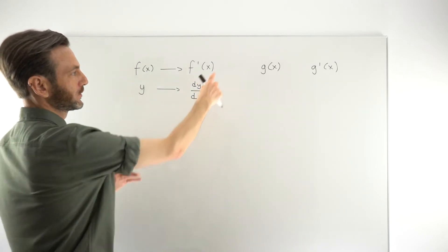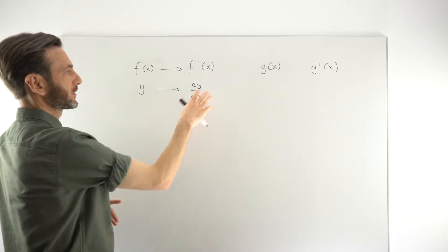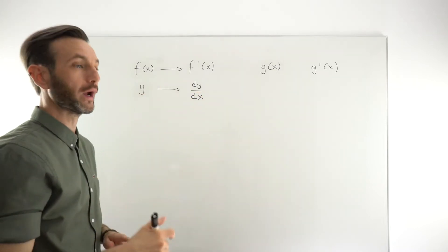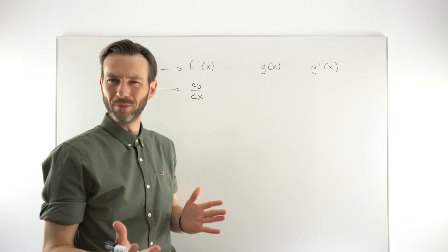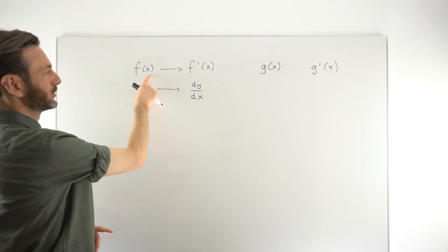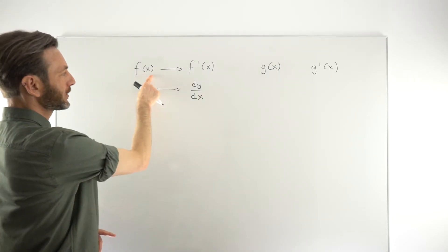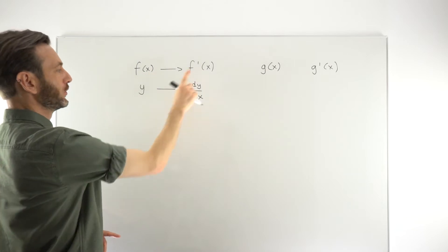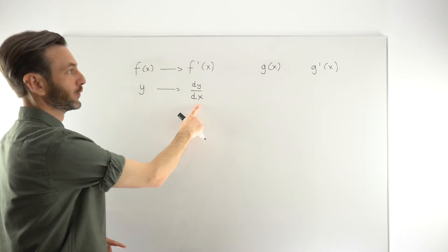The way that we arrive at these two notations thinks about differentiation in a slightly different way, but you don't really have to worry about that or think about that. All you need to know is that if a function is given to you in this format, then this is the notation we'll use. If it's given in this format, this is the notation we'll use.